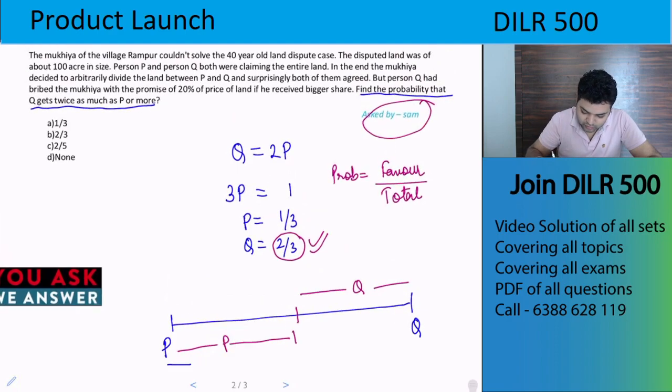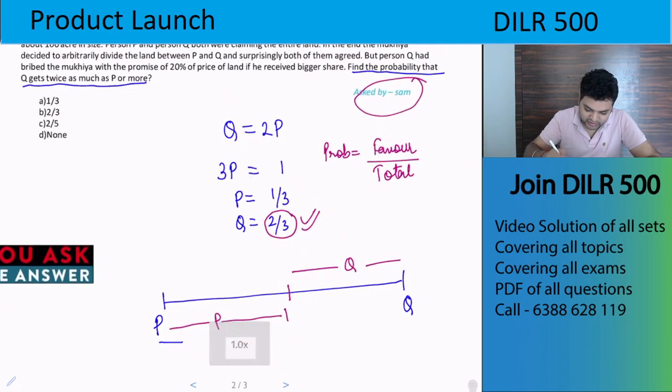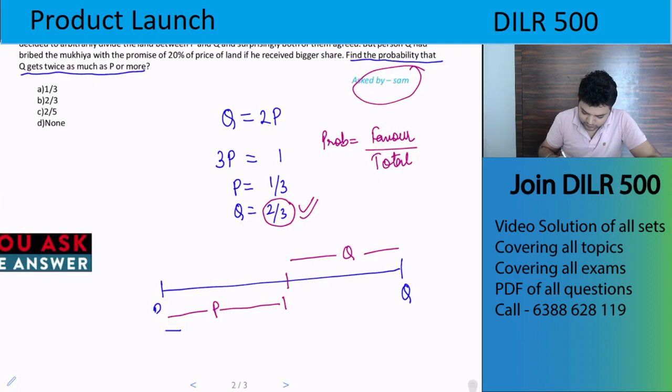So what is the favorable case? Q's value should be more than 2/3. Person Q - find the probability that Q gets twice as much or more. So if Q has to be more than 2/3, meaning if I do the division, if this whole is 1, let's say this is the 2/3 mark, then Q has to be at least till here to be in favorable cases.